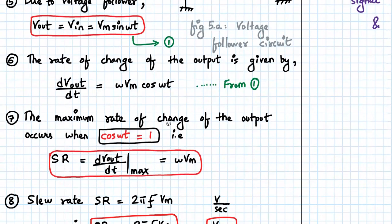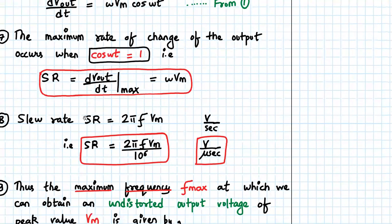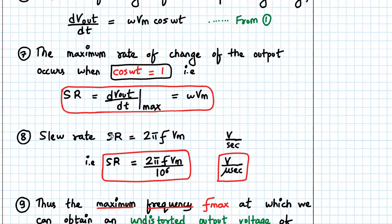So maximum rate of change of output voltage occurs when cos of omega t is 1. Correct. So the slew rate formula will become dVout by dt max value. You will get omega into Vm only, cos omega t will become 1. And from your omega, you can substitute it as 2 pi f. So slew rate will be 2 pi f into Vm. Now the unit is volts per second. If you want to convert into volts per microsecond, then the formula will become SR equals 2 pi f Vm divided by 10 raised to 6.